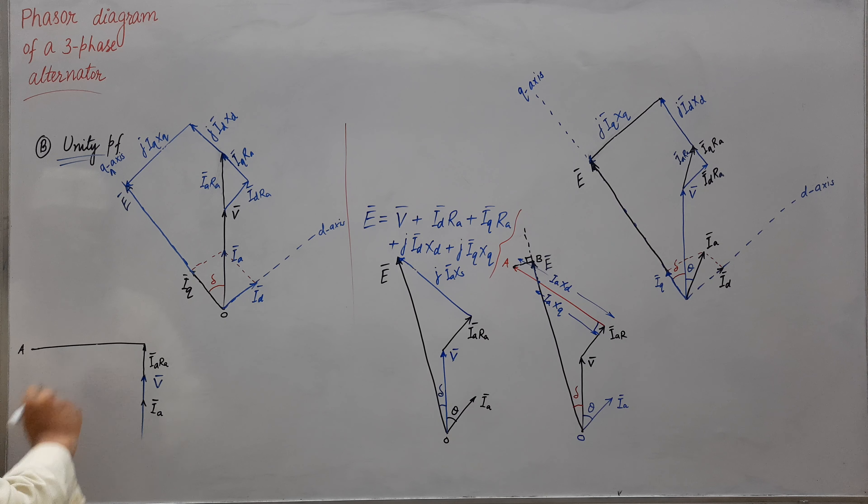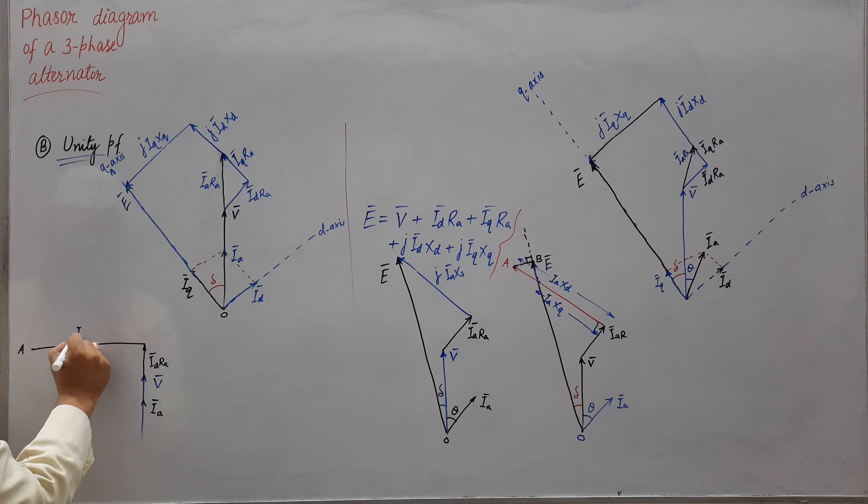Meets at point A, so mark at point A and this is Iaxd right here, Iaxd from here till here. Now cut Iaxq, same procedure, so from here somewhere let us say this is Iaxq length. Obviously xq is lesser than xd, so we will have somewhere let us say this point.